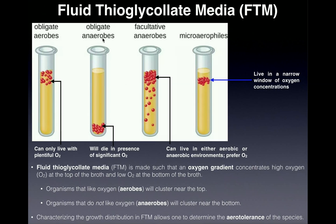Our next kind is obligate anaerobes, sometimes called strict anaerobes. These organisms are obligated to live in an anaerobic environment — without oxygen. You'd expect to find them towards the bottom of the tube, sometimes occupying the bottom two-thirds. Most obligate anaerobes will actually die if exposed to oxygen. A good example is Klebsiella — nitrogen-fixing bacteria in soil that have mechanisms to rid themselves of oxygen because it would kill them.